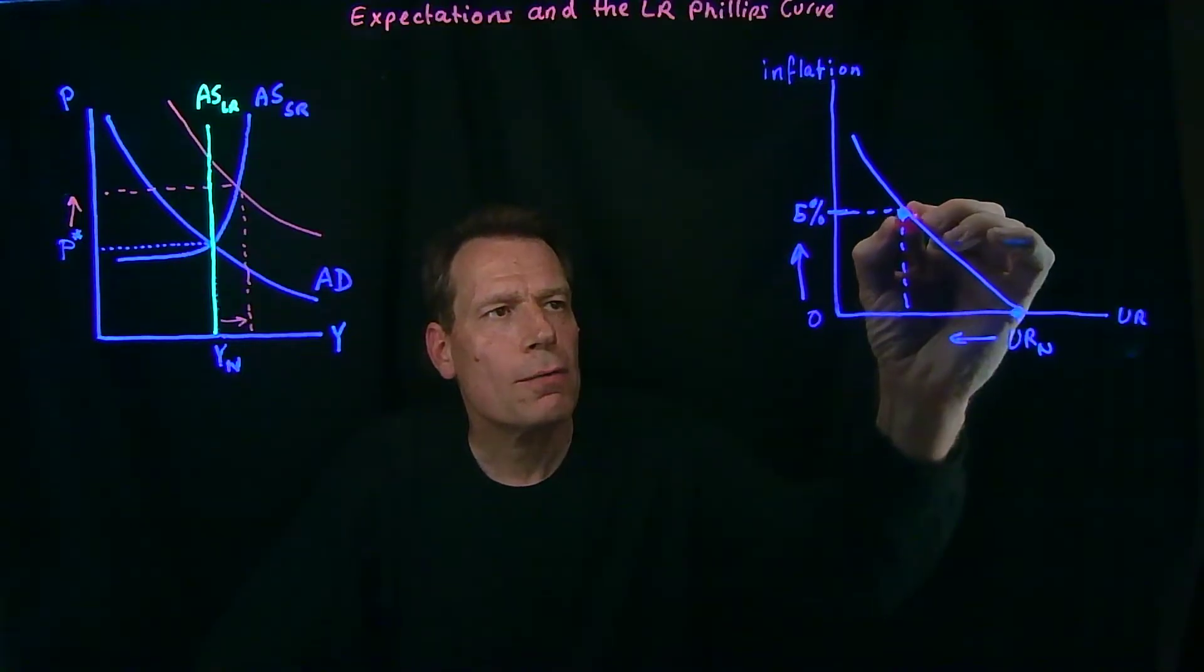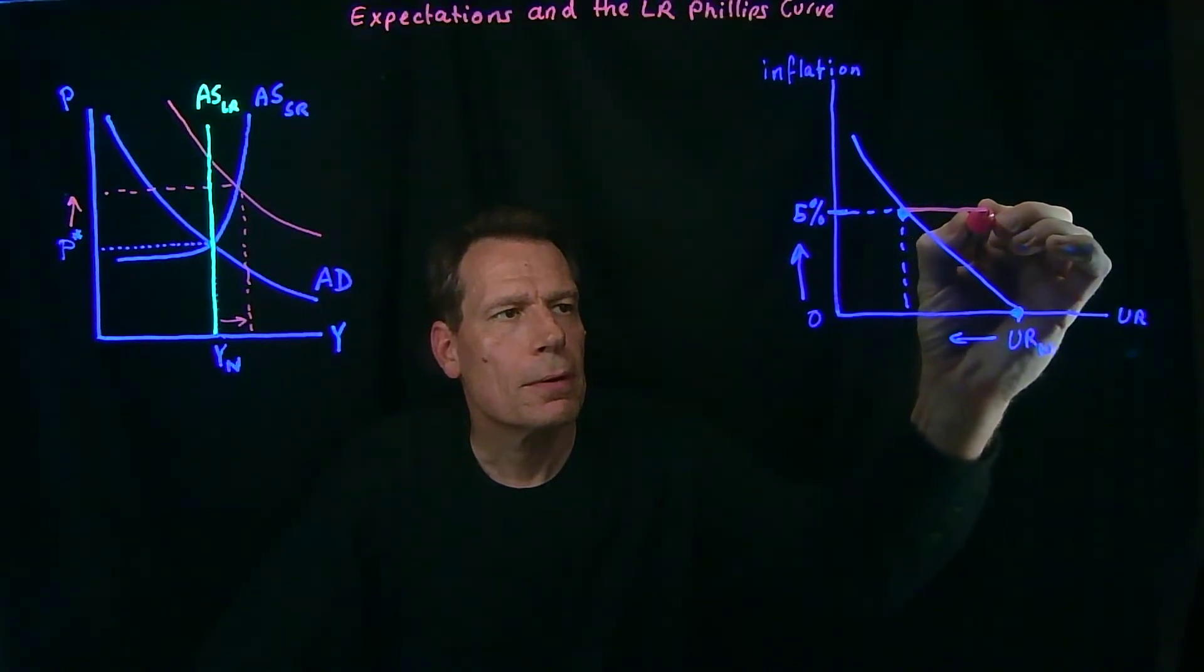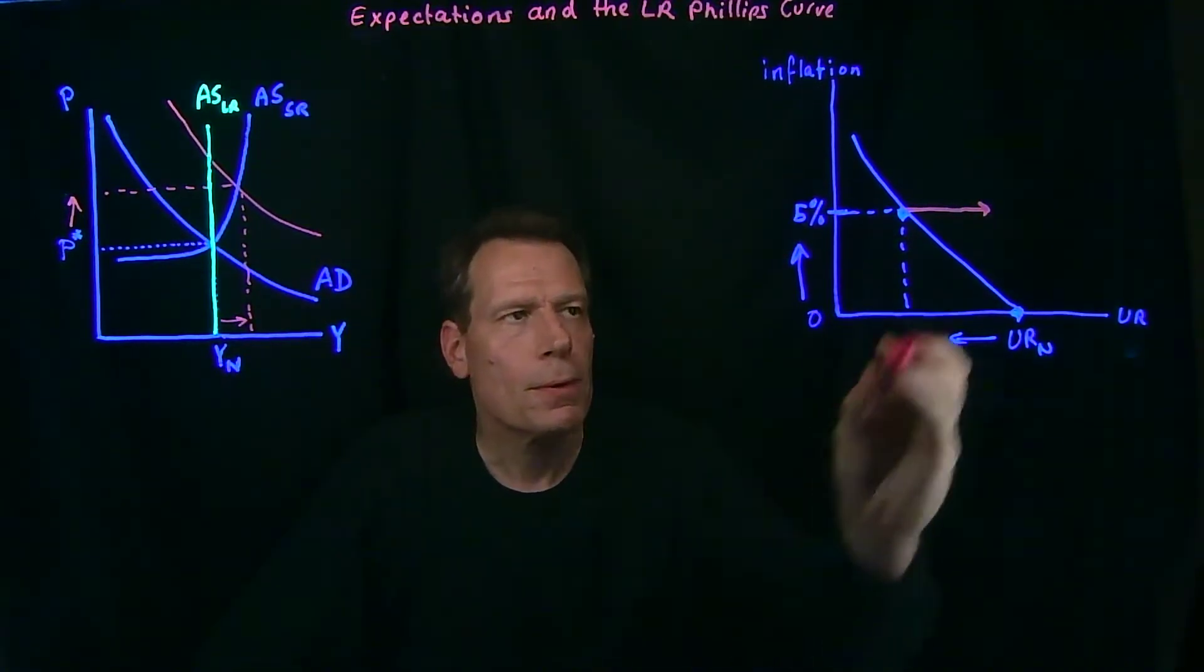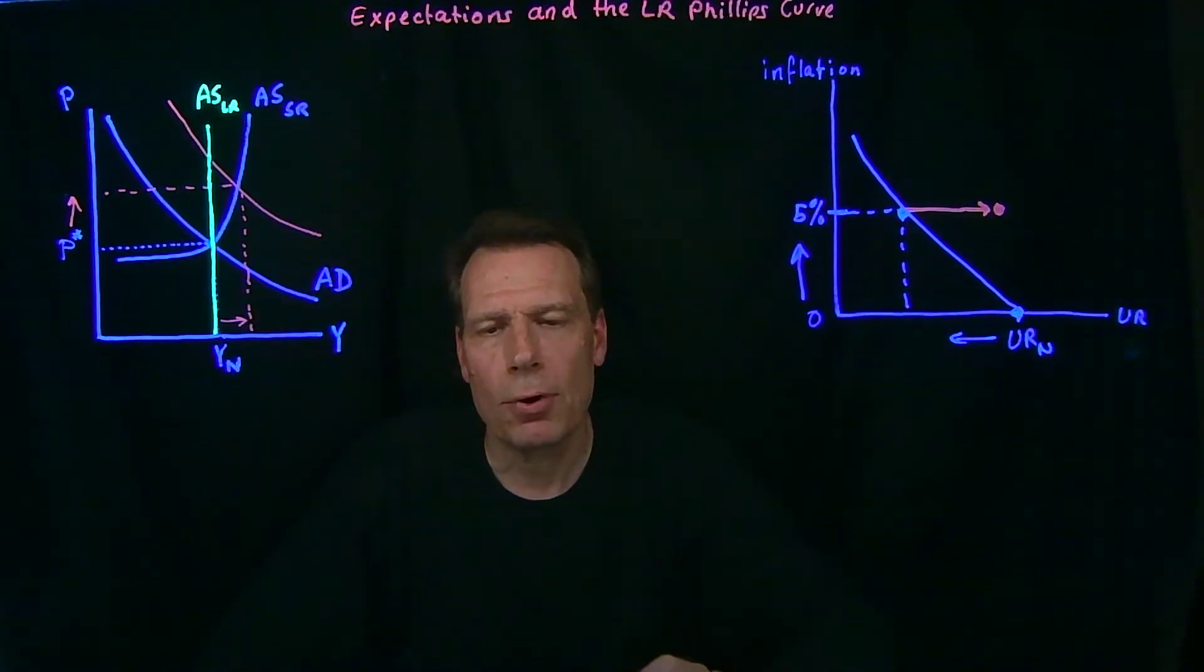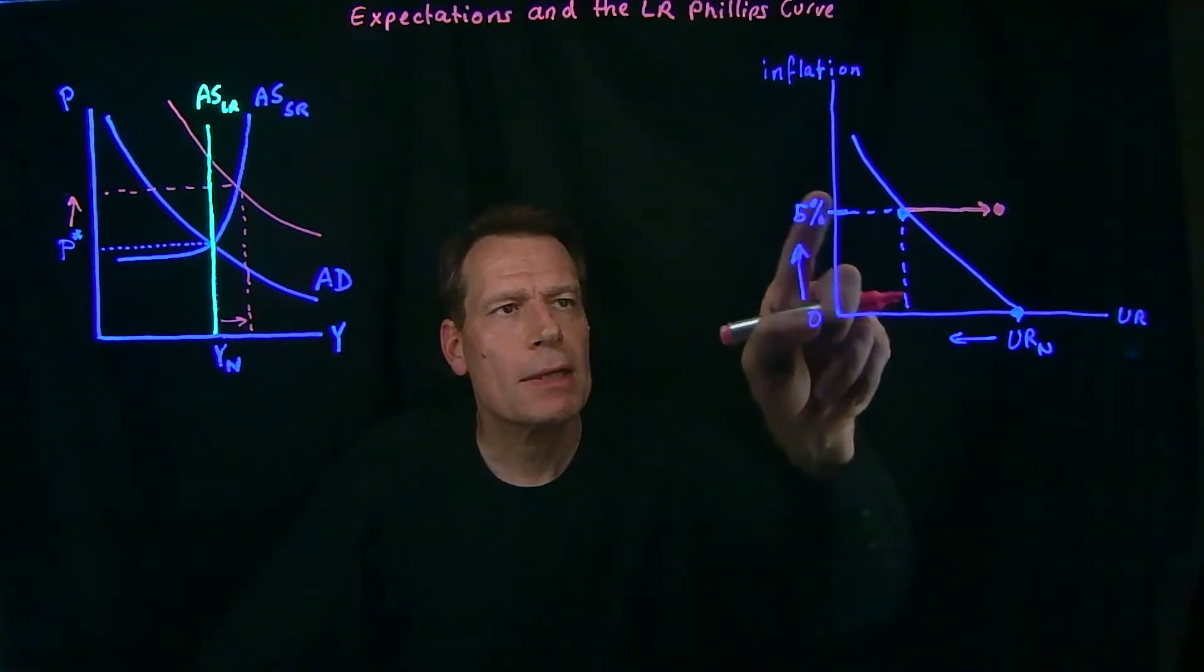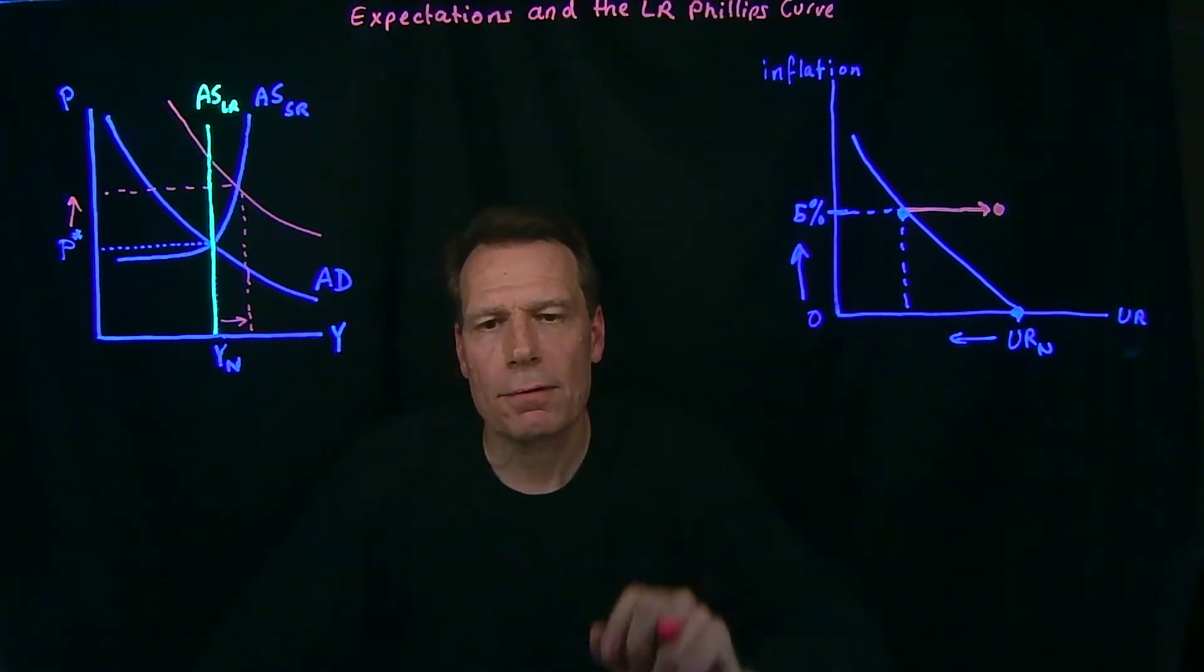So, now we're moving off the original Phillips curve in this direction to a new point where we have the original unemployment rate, the natural unemployment rate, but everybody's expecting a higher level of inflation.